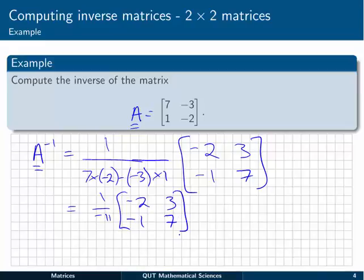You could leave it like that if you like, or you can actually just push it all the way through. So we've got 2 on 11, minus 3 on 11, 1 on 11, and minus 7 on 11 as our inverse matrix.